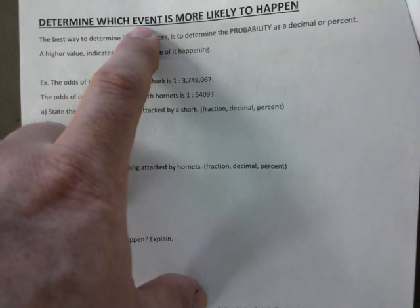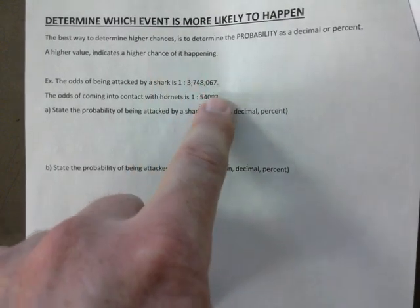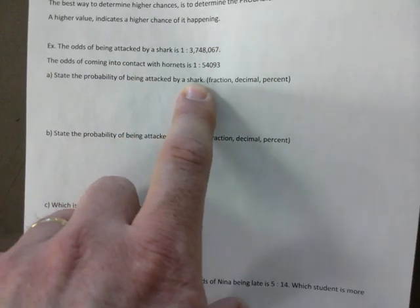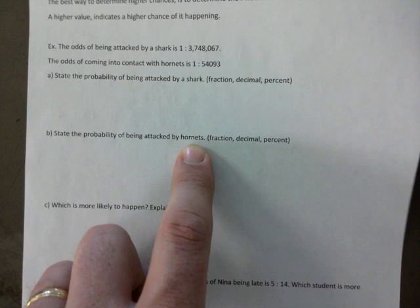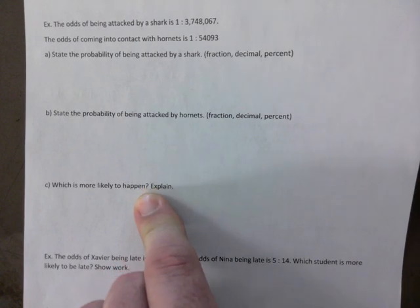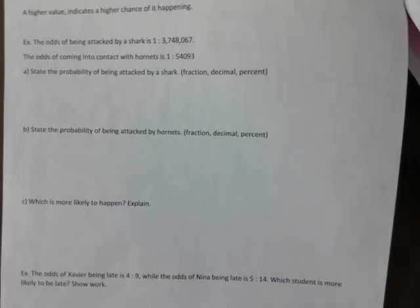Page 23 asks you to determine which event is more likely to happen. Find the probability of being attacked by a shark and the probability of being attacked by hornets, state each in three formats, then determine which is more likely. The higher percentage is the one more likely to happen. I'm combining probability and odds conversion here, and doing cards on page 24 as well.